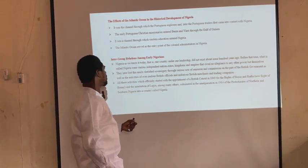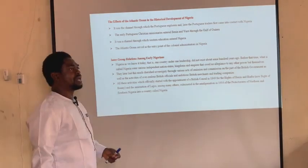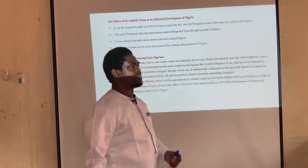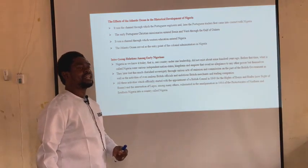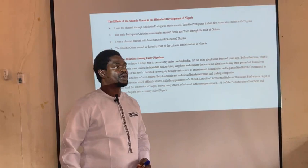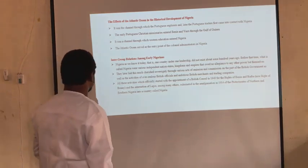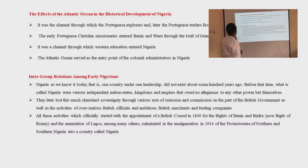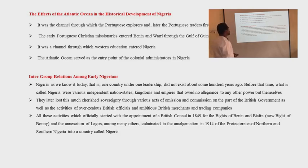Having discussed the effects of the Atlantic Ocean on the historical development of Nigeria, we are now going to look at intergroup relations among early Nigerians. Remember that this area called Nigeria was not known as Nigeria — Nigeria only came into existence in 1914. But that does not mean there were no cultural and intergroup relations. Nigeria as we know it today — one country under one leadership — did not exist about a hundred years ago. Before that time, what is called Nigeria consisted of various independent nation-states, kingdoms, and empires that held no allegiance to any other power but themselves.